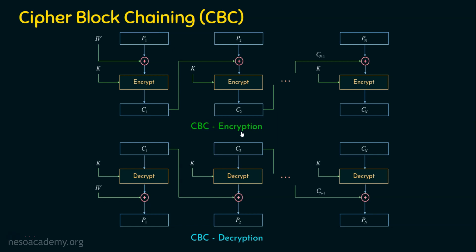This is about the CBC encryption, and coming to the decryption, it is just reversed. In decryption, ciphertext 1 is decrypted. For ciphertext 1, the initialization vector was used for generating it. So for plaintext 1, the ciphertext is given to the decryption function. The decryption function takes the same key, and the output is XORed with the initialization vector, giving back the plaintext. So C1 takes IV because P1 took IV.